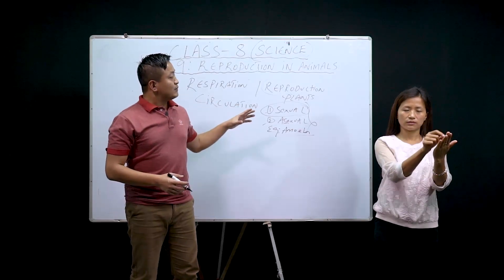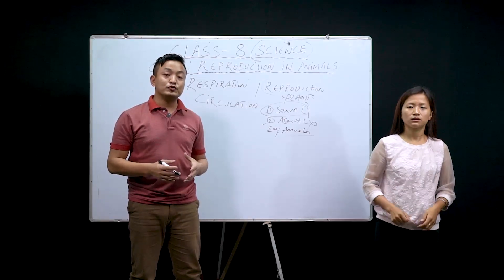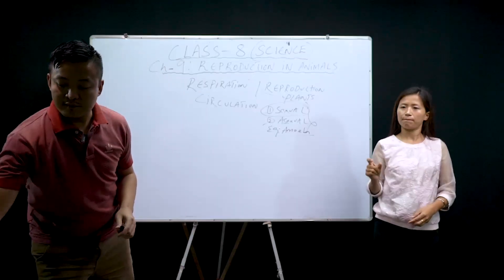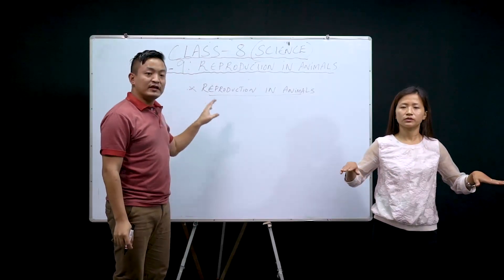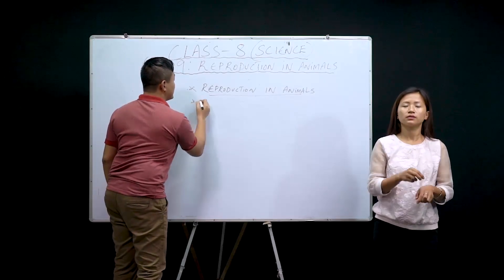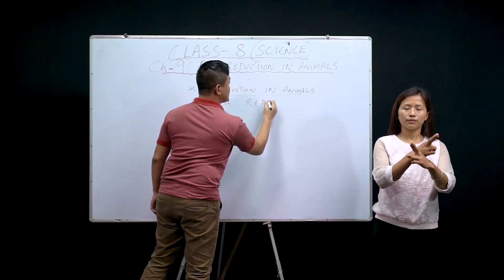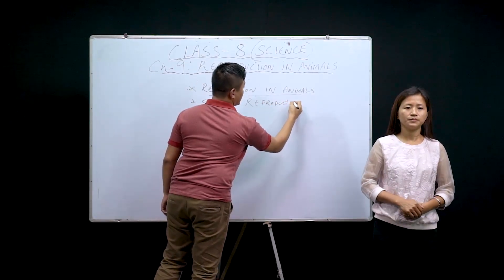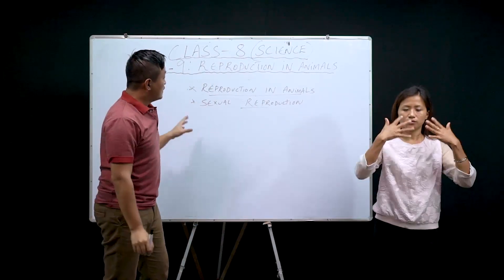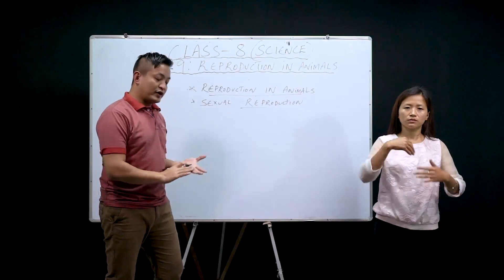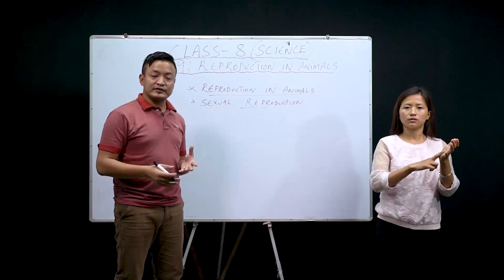Now we'll study about reproduction in animals. First, let's study about humans. We are going to start about reproduction in animals. First, we'll discuss about sexual reproduction in animals. In humans, we have a male reproductive organ and a female reproductive organ.